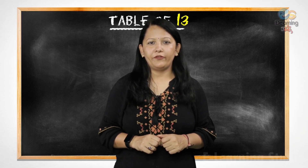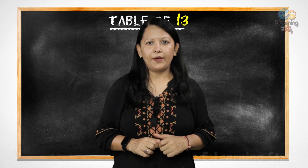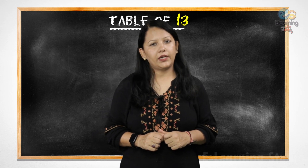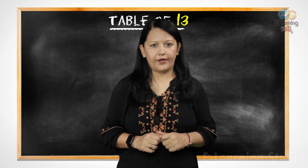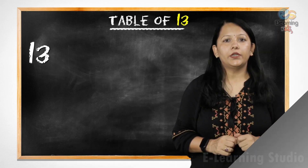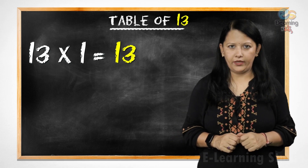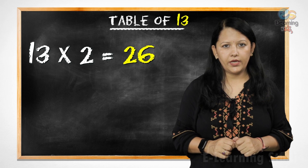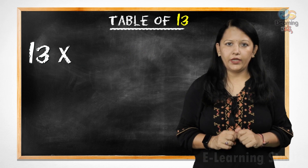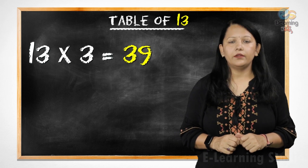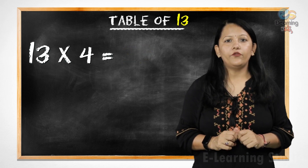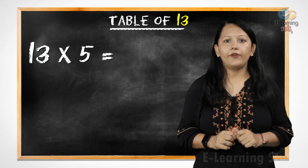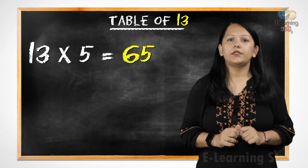Hello everyone, welcome back. In today's video, we will learn table of 13. Let's start. 13 ones are 13, 13 twos are 26, 13 threes are 39, 13 fours are 52, 13 fives are 65.